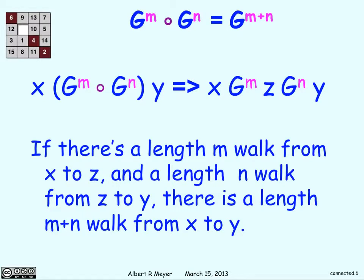And why this is the same thing as G^(m+n) makes sense. If there's a path length m to z and a path length n from there to y, you just go from x to z in m steps, then z to y in n steps, and you have m plus n steps from x to y.